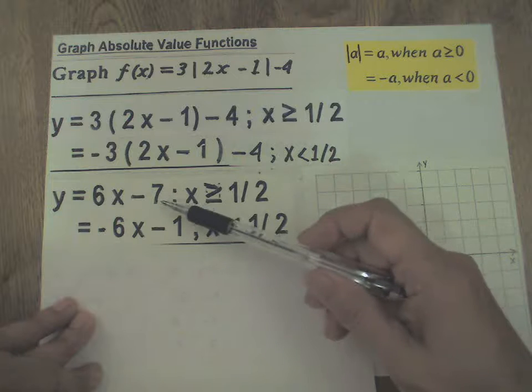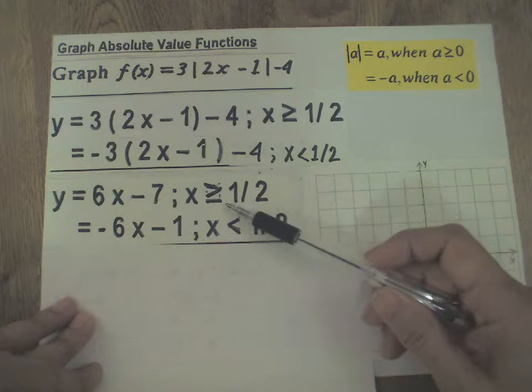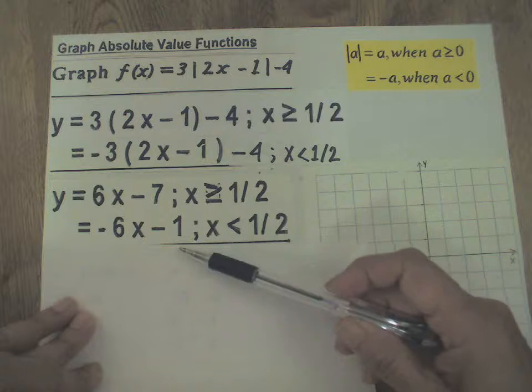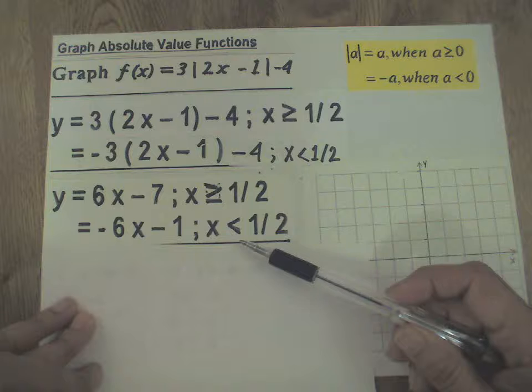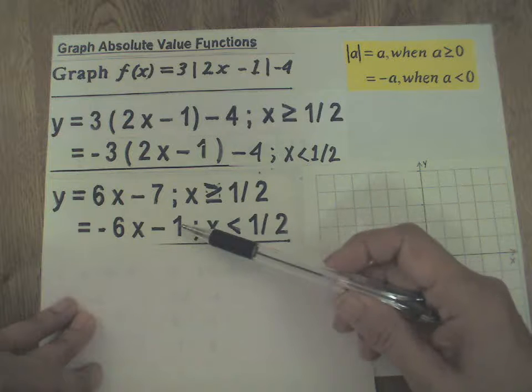It's going to represent this straight line to the right of 1/2, including 1/2, and this straight line to the left of 1/2. So we are going to graph these two straight lines next.